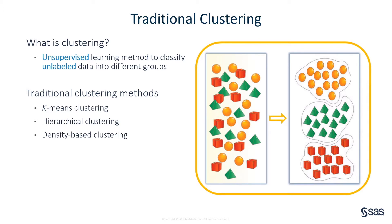In the example shown here, we can put the objects into three groups by considering only their shapes and colors. Some well-known clustering methods are k-means clustering, hierarchical clustering, and density-based clustering. They work well for low-dimensional data, but they are not suitable for high-dimensional data, especially images and texts.